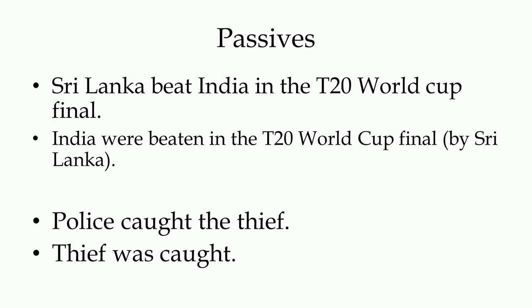Let us look at two examples each of active and passive sentences. 'Sri Lanka beat India in the T20 World Cup Final' is an active sentence where Sri Lanka is the subject, beat is the verb, India is the object, and T20 World Cup Final is an adjunct. In the passive counterpart, 'India were beaten in the T20 World Cup Final' — we can add 'by Sri Lanka,' but that is not a required element; preceded by a preposition, it gets the status of an adjunct in the passive sentence. This has consequences we will look at shortly.